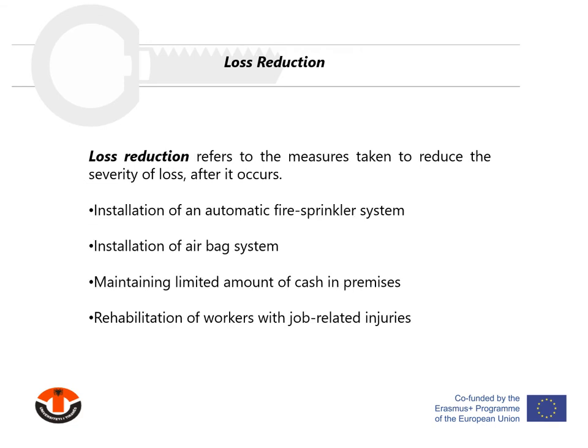Loss reduction refers to the measures that reduce the potential severity of loss. Despite loss prevention measures, some losses still occur. Loss reduction techniques aim to minimize the magnitude of the loss. For example, installation of an automatic fire sprinkler system would not reduce the probability of loss, but it reduces the amount of damage if a fire occurs. Loss reduction activities may occur before and after loss. Pre-loss activities refer to measures taken before loss occurs, such as installation of first aid boxes or airbag systems in cars.